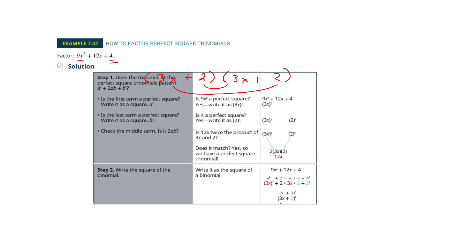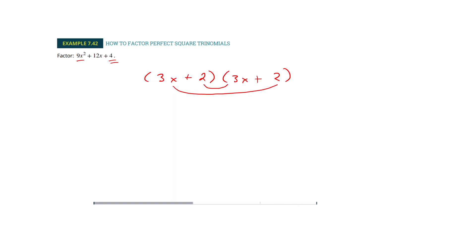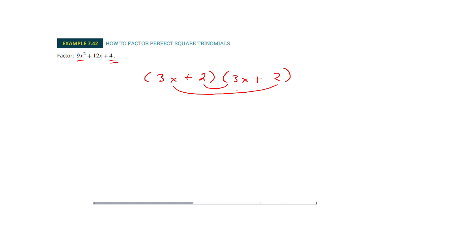Some books will write it like (3x + 2)². Now that is true, but remember it means the same thing. When I work them, I'm going to show it as two separate factors because that's how we work the other ones and I want it to be consistent.